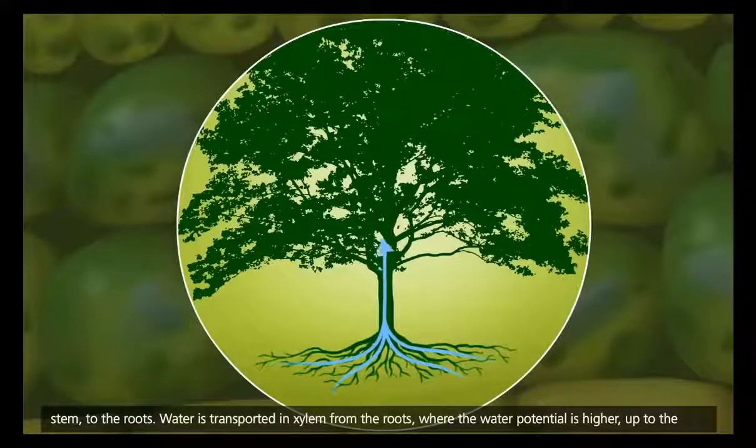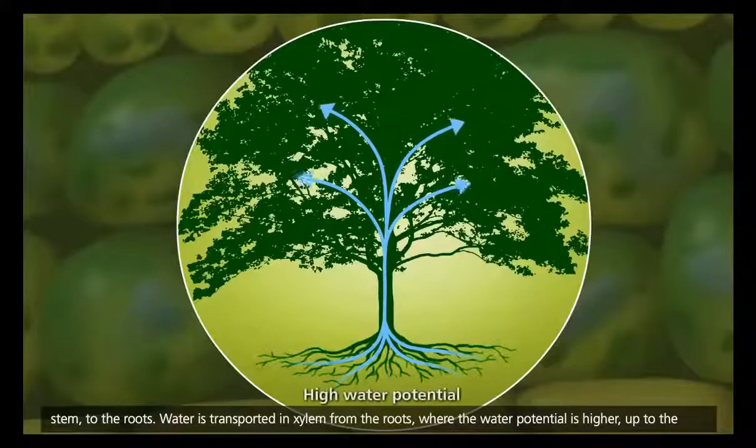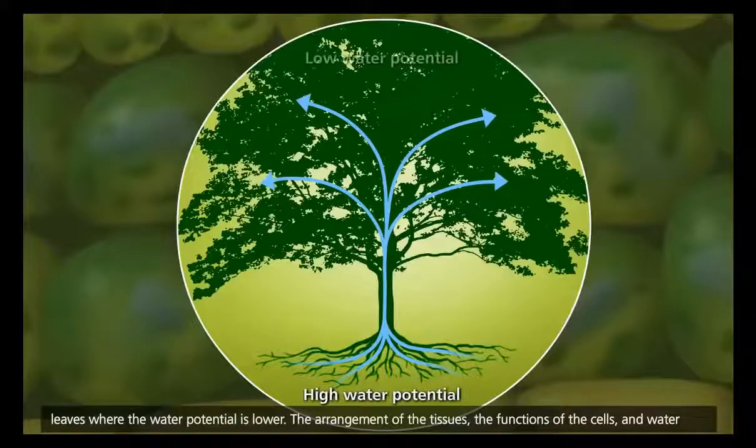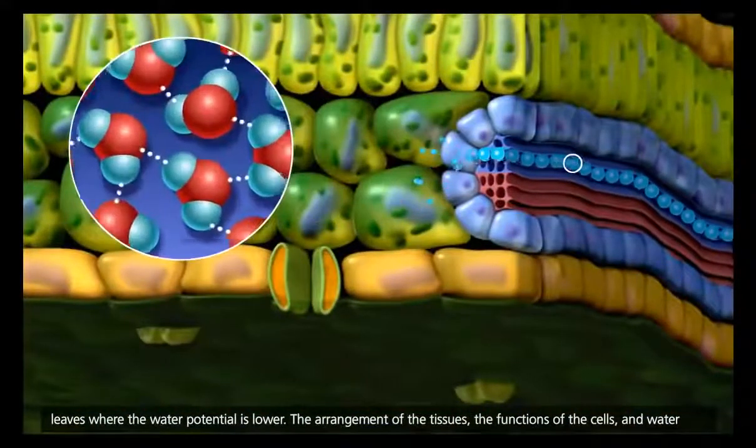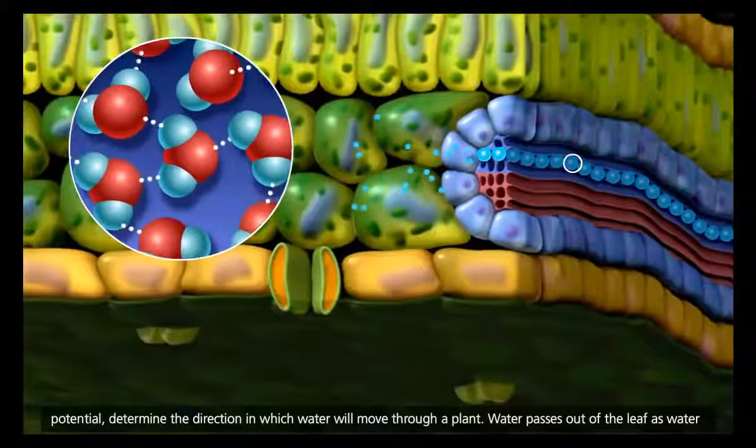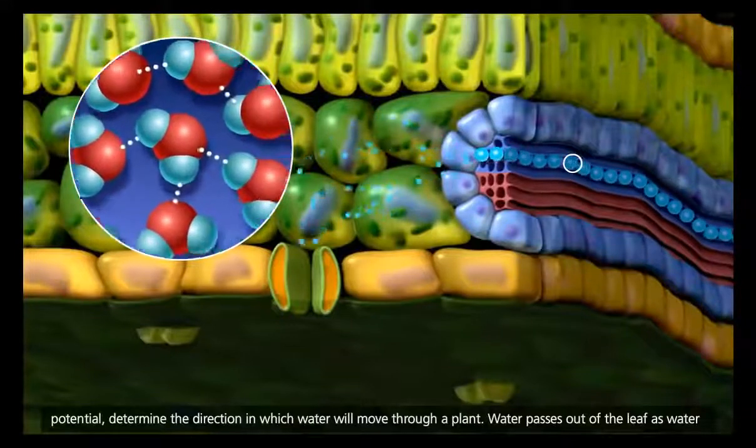Water is transported in xylem from the roots, where the water potential is higher, up to the leaves, where the water potential is lower. The arrangement of the tissues, the functions of the cells, and water potential determine the direction in which water will move through a plant.